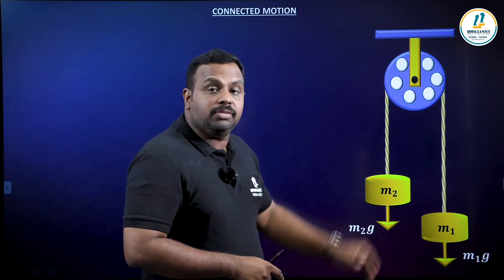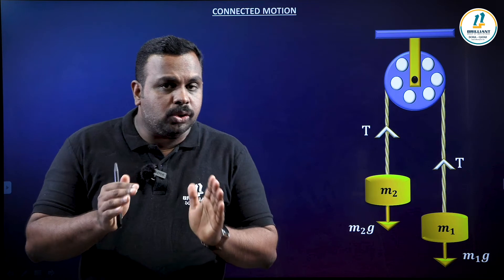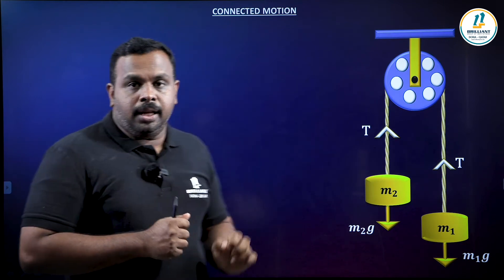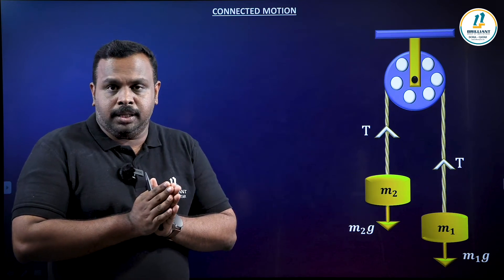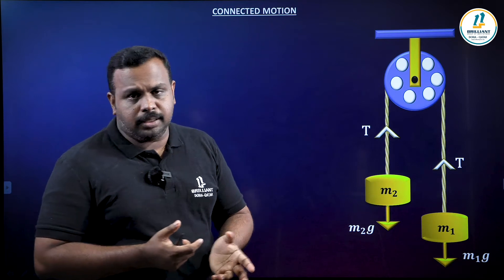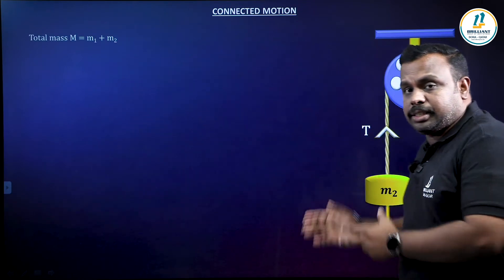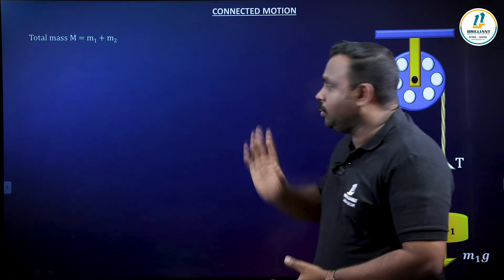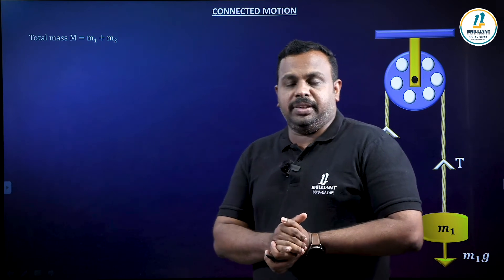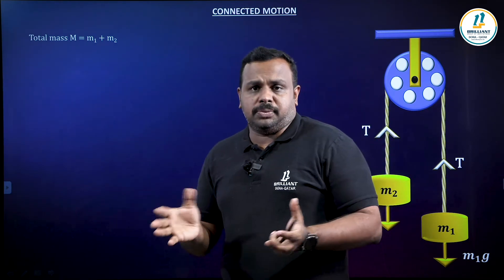There will be tension in the string acting in both directions. Our final aim is to find the tension, but first we have to find the acceleration of the system. Let us assume A is the common acceleration — M1 going down and M2 going up with acceleration A. The total mass of the system is M1 plus M2. The second step is to find the net force acting on the system.